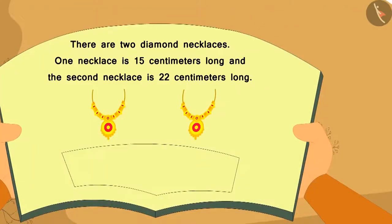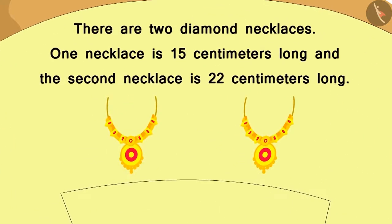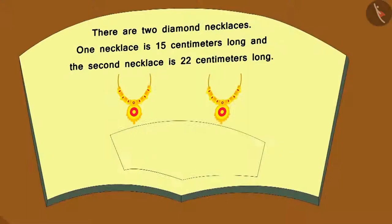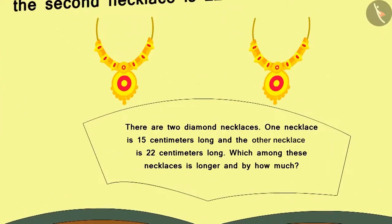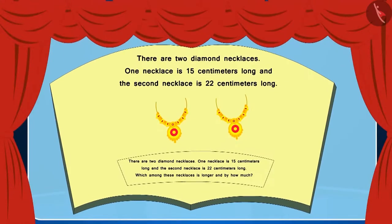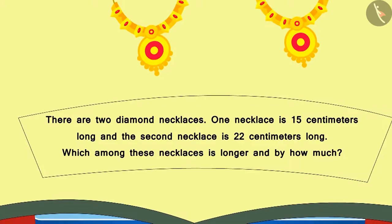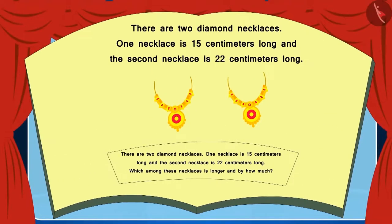Chanda immediately turned the page of the book and she saw this picture. There are two diamond necklaces here. One necklace is 15 centimeters long and the second necklace is 22 centimeters long. Chanda immediately wrote this question: There are two diamond necklaces. One necklace is 15 centimeters long and the other is 22 centimeters long. Which among these necklaces is longer, and by how much? Chanda has made a subtraction question here. Whenever we have to compare the difference between two numbers, we can use subtraction.